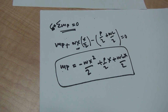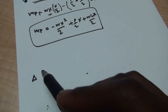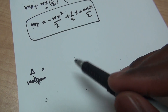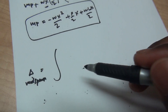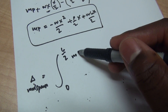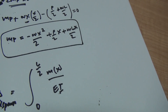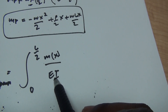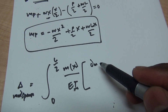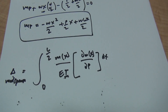Next I'll introduce the formula for finding deflection. The deflection at mid-span equals the integral from 0 to L/2 of M(x) over EI times the partial derivative of M with respect to P, all with respect to X. E and I are just constants — they'll be given in the problem, so it's just plugging and chugging. That is my formula for finding deflection.